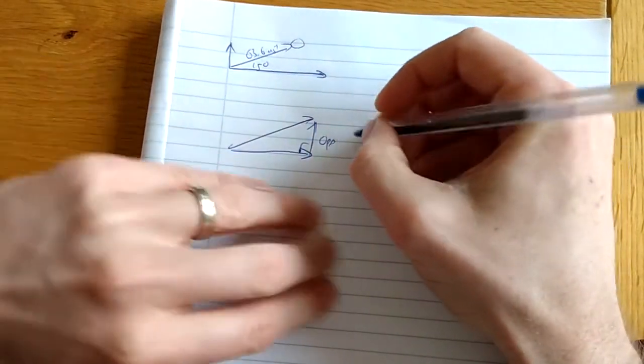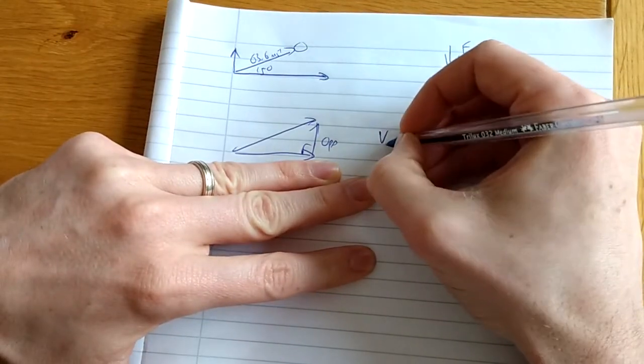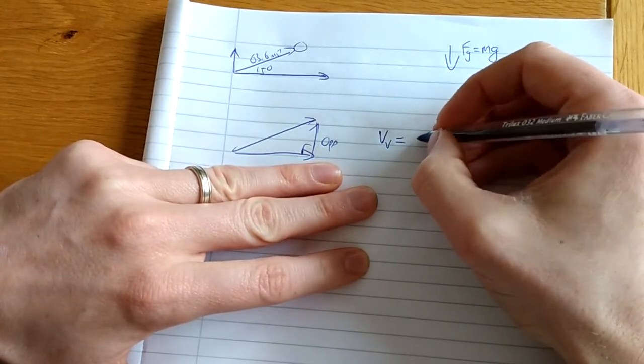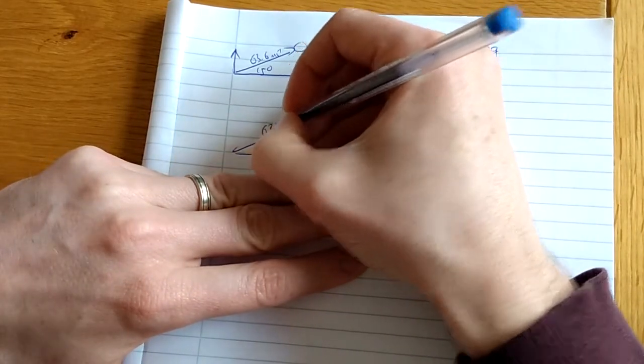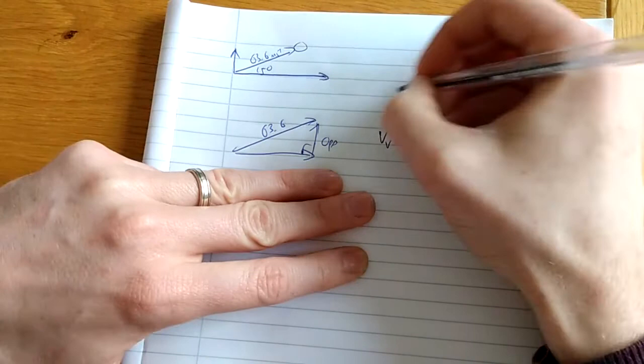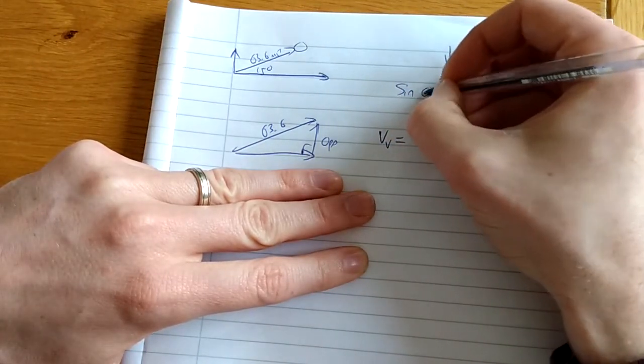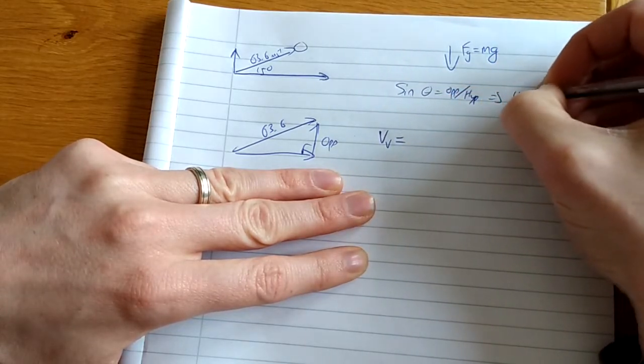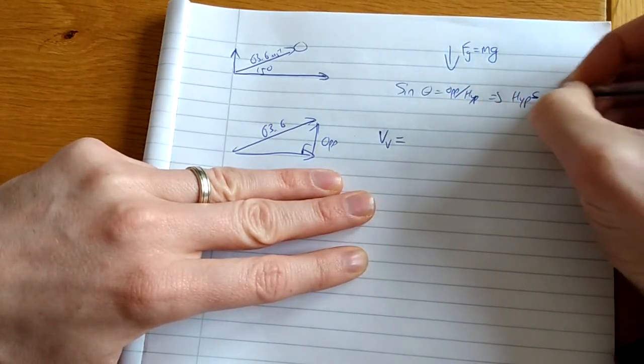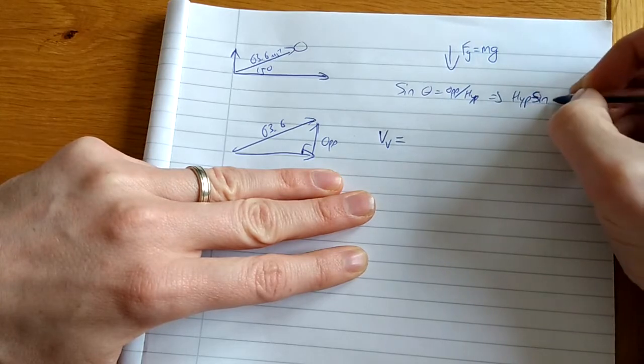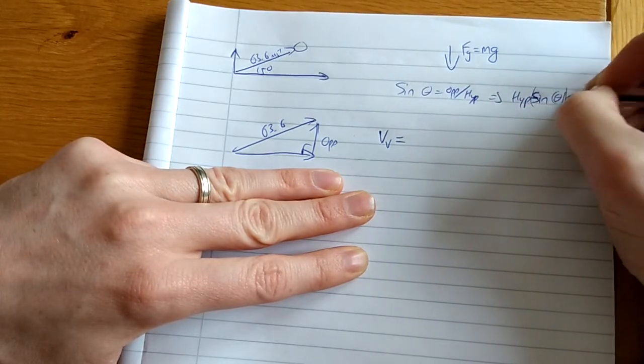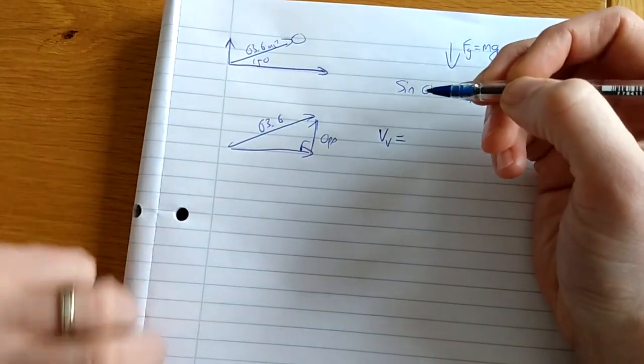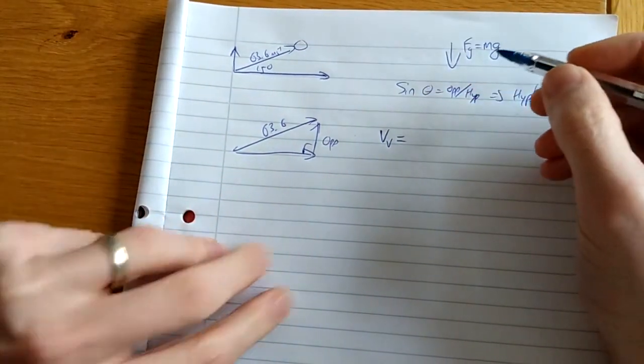I want to know what that opposite is, so I'm going to call it vv for the vertical velocity. Can you see everything I'm working with? You can.